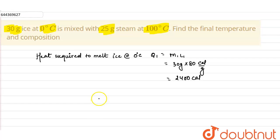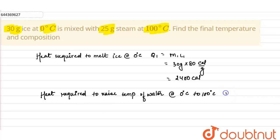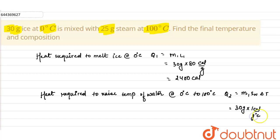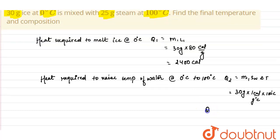Now find the heat required to raise the temperature of water from 0°C to 100°C, called Q2. That is given as the mass of melted ice (m1) multiplied by specific heat of water multiplied by change in temperature. So Q2 = 30 grams × 1 cal/g/°C × 100°C = 3000 calories.